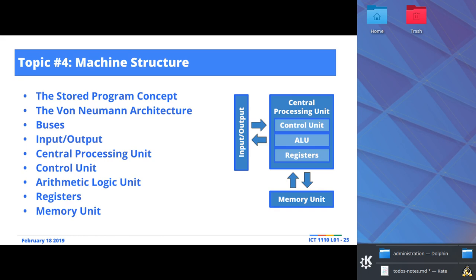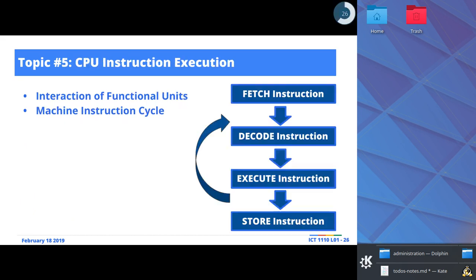We'll spend the entire year looking at these three components essentially — that's what makes this course straightforward in my opinion. Once we get to the central processing unit, we'll focus on the control unit, the arithmetic and logical unit, and registers. The next topic will be centered around understanding how the instruction cycle — the CPU cycle — actually works when a program is running.